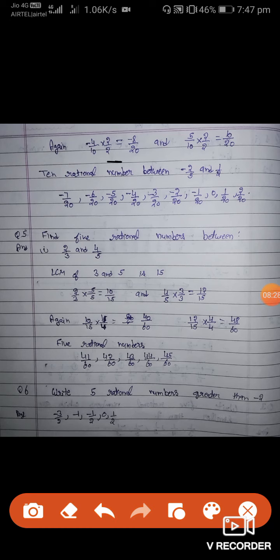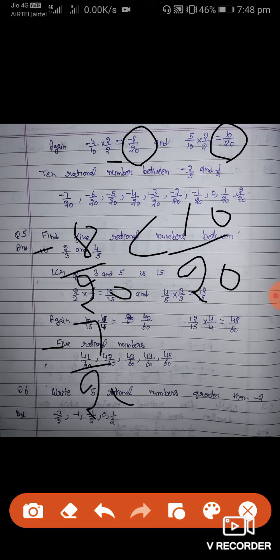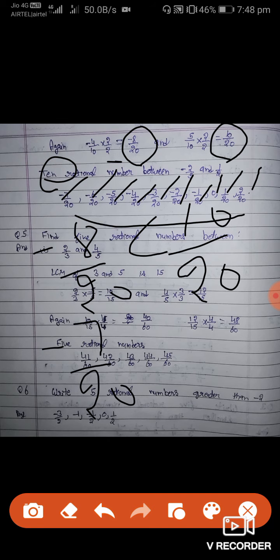इसी कारण से again 2 by 2 से multiply की: minus 4 by 10 into 2 by 2 = minus 8 by 20, और 5 by 10 into 2 by 2 = 10 by 20. अब minus 8 by 20 और 10 by 20 के बीच 10 rational numbers: minus 7 by 20, minus 6 by 20, minus 5, minus 4, minus 3, minus 2, minus 1 by 20, 0, 1 by 20, 2 by 20. 10 complete हो गए. Question number 4 complete.